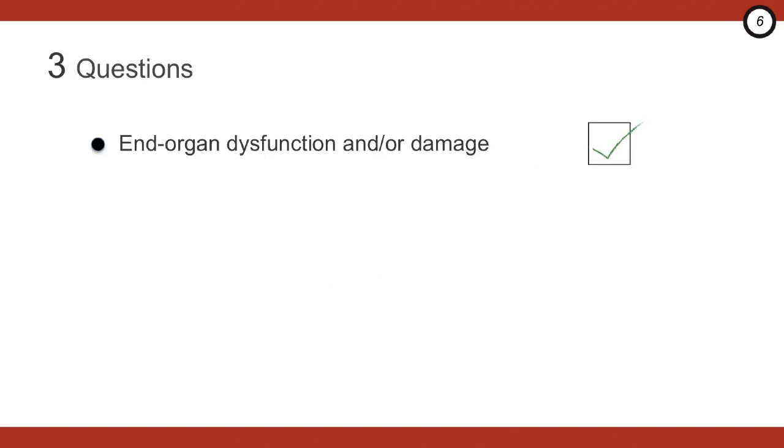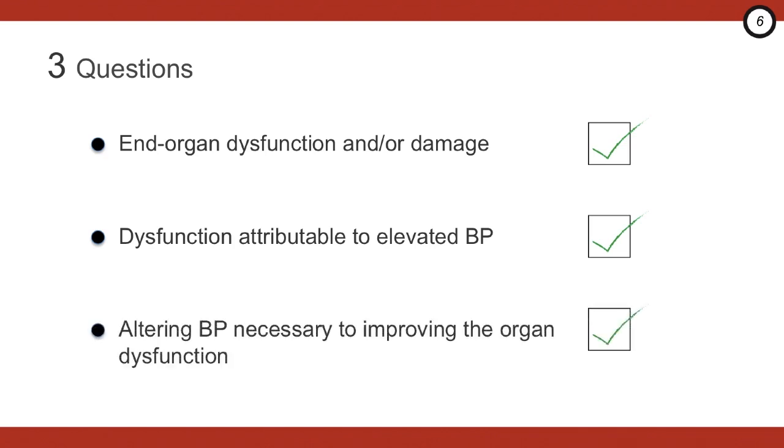There are other cases that aren't so clear, like this one. But all you need to know, is this a hypertensive emergency or not? And in order to figure this out, you can ask yourself three questions. Is there acute end-organ dysfunction and or damage? Is the dysfunction attributable to the elevated blood pressure? Or will the elevated blood pressure make the dysfunction worse? And is altering the blood pressure necessary to improve the organ dysfunction?